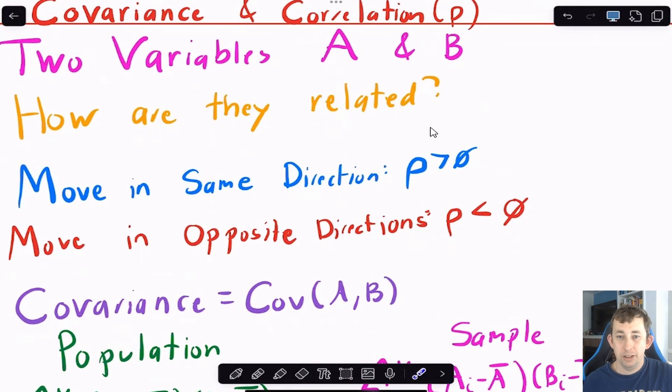The last thing I'm going to talk about for the stats review is how we relate two variables to each other. So two variables A and B, we're asking how they're related. And so what we're going to do is we're going to think about, do they move in the same direction or do they move in opposite directions? If they move in the same direction, we're going to say that they're positively correlated. And so what we're going to say is that their rho or their correlation coefficient is greater than zero. They move in opposite directions. If when A goes up, B goes down, for example, we're going to say they have a negative correlation. And just to remind you that rho is always less than or equal to one. So we have that the absolute value of rho is less than or equal to one or negative one is less than or equal to rho is less than or equal to one.